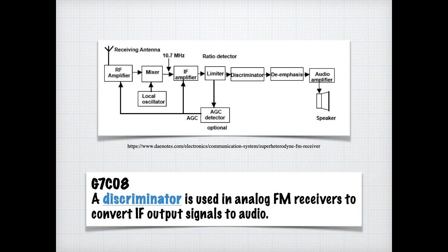In this block diagram, we can see an RF amplifier is feeding into a mixer, which is also fed by a local oscillator. It's fed into an IF amplifier stage into a limiter. We get the automatic gain control detector, which gives feedback to the amplifiers. The output of the limiter is fed into a discriminator, a de-emphasis stage and then an audio amplifier and ultimately out of speaker. For the exam, you need to know that the discriminator is used in an analog FM receiver to convert IF output signals into audio.